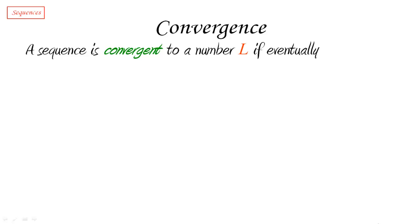So we're going to say that the sequence is convergent to a number L if eventually, that means from some point on, the difference between the terms of the sequence and this number L are less than epsilon for any small number epsilon we choose.